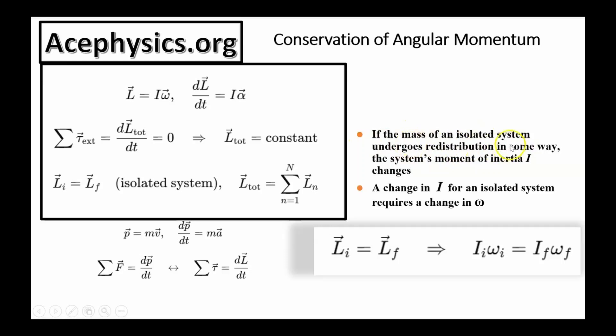If the mass of an isolated system undergoes a redistribution in some way, the system's moment of inertia changes. A change in I for an isolated system requires a change in omega. The angular velocity might change, but the angular momentum does not. Let's solve some problems to get a strong understanding of this material.